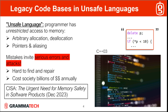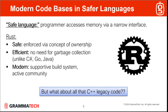These problems have been with us for decades. They cost the software industry billions every year, and this is acknowledged all the way up to high-level government agencies. In response, several safer languages have been developed to address this problem, including Rust.